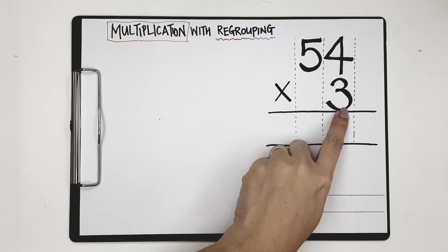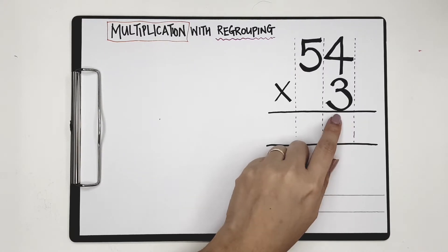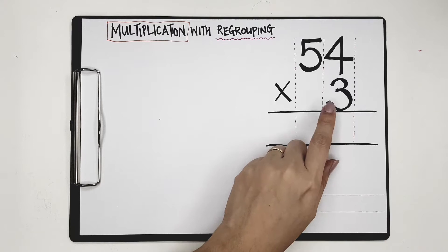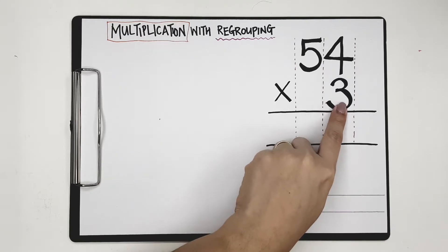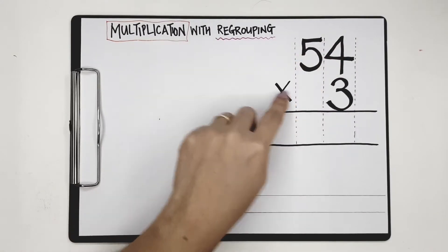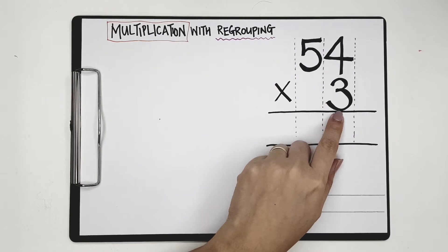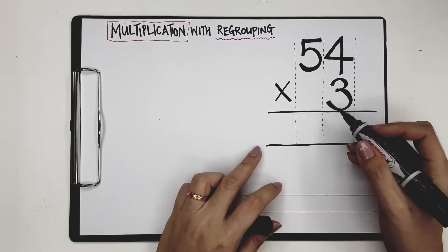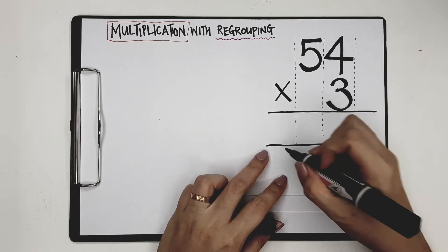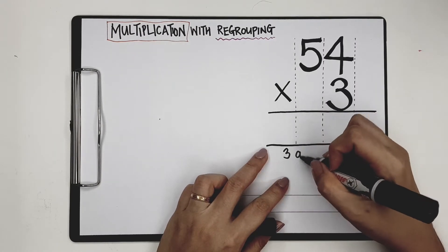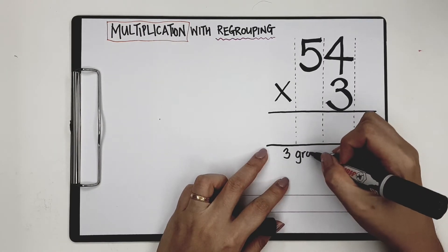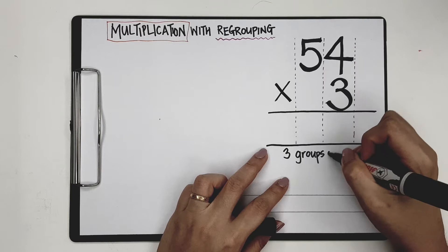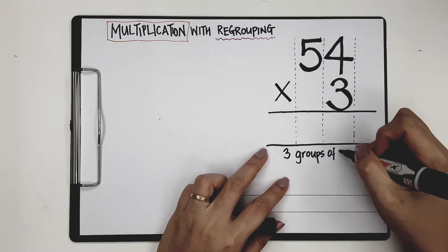We learn that multiplication can be thought of as groups of. I'm going to let 3 be the number of groups. So when I have 54 times 3, I'm going to read it as 3 groups of 54. That's what I'm going to be writing down here — I want to find out 3 groups of 54.